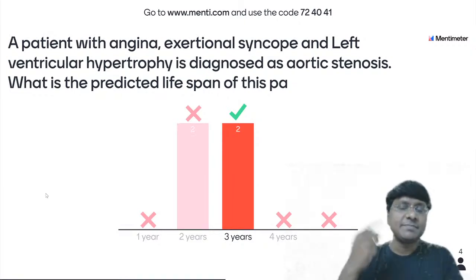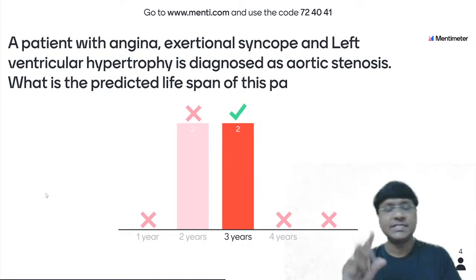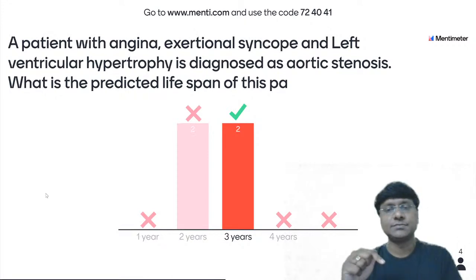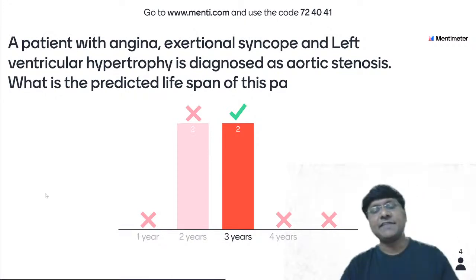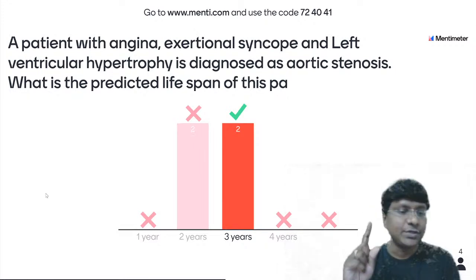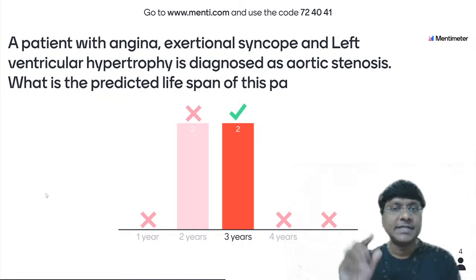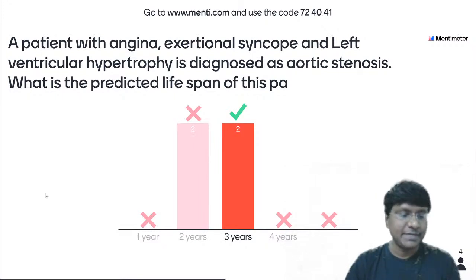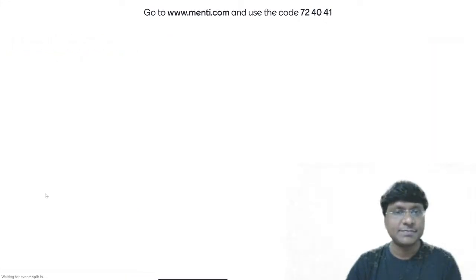If the individual develops dyspnea with aortic stenosis, the predicted lifespan is only two years. If the individual develops congestive heart failure with aortic stenosis, the predicted lifespan is only one year. These patients with aortic stenosis, once they become symptomatic, have very poor prognosis and must be treated with aortic valve replacement.